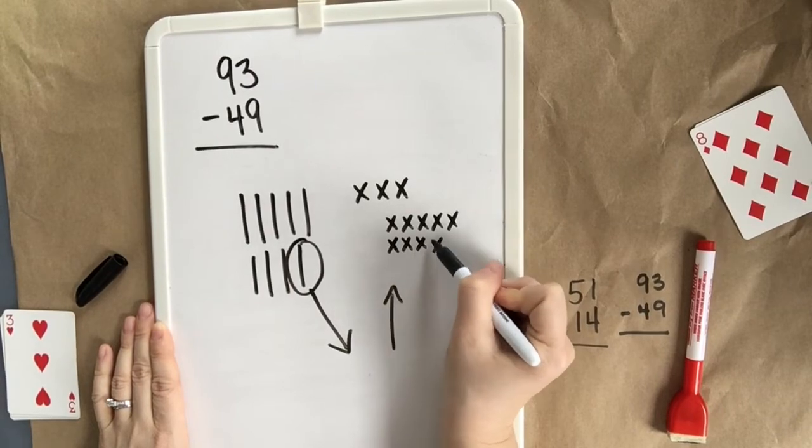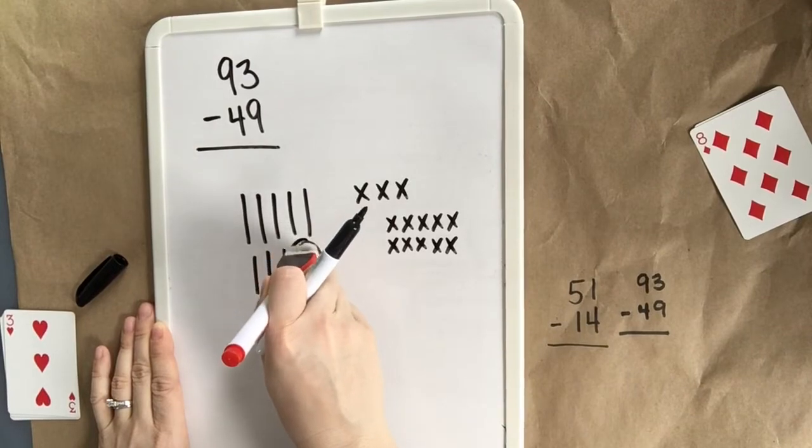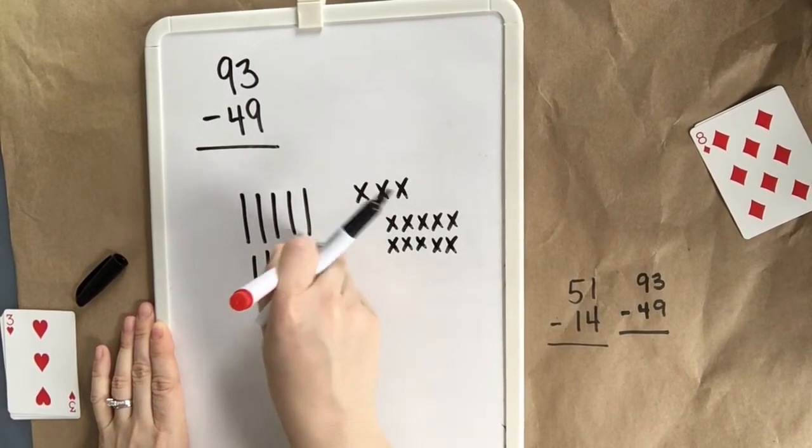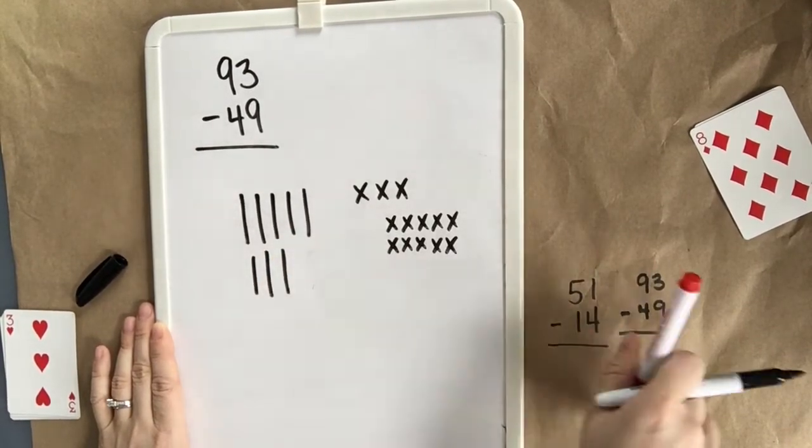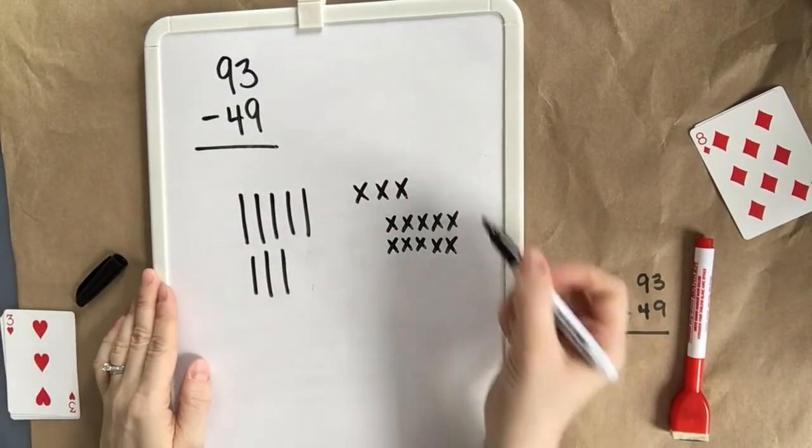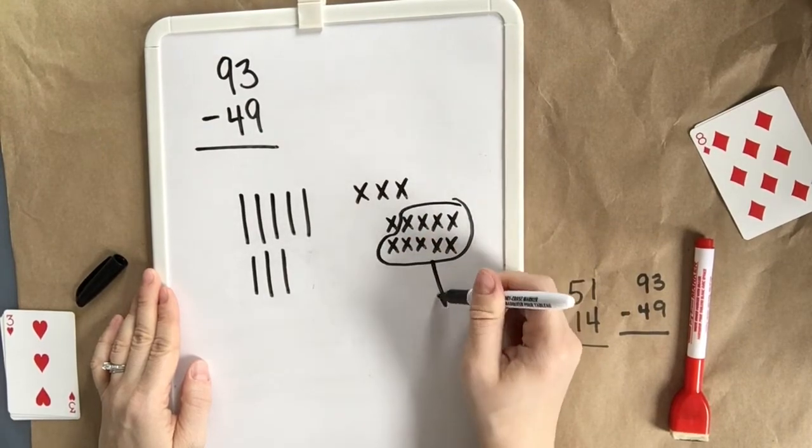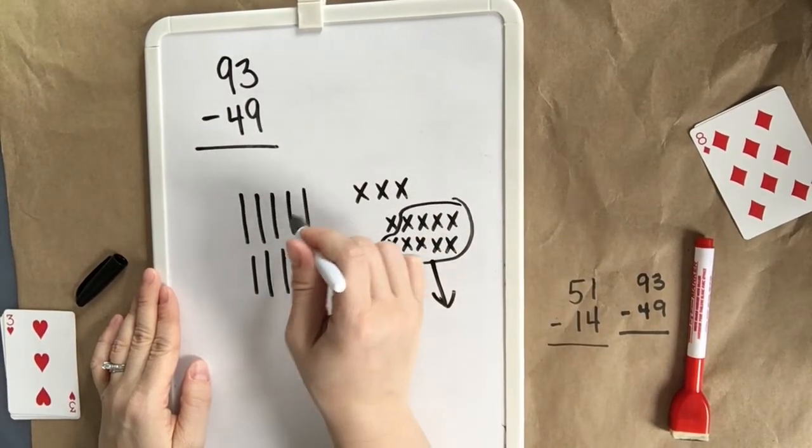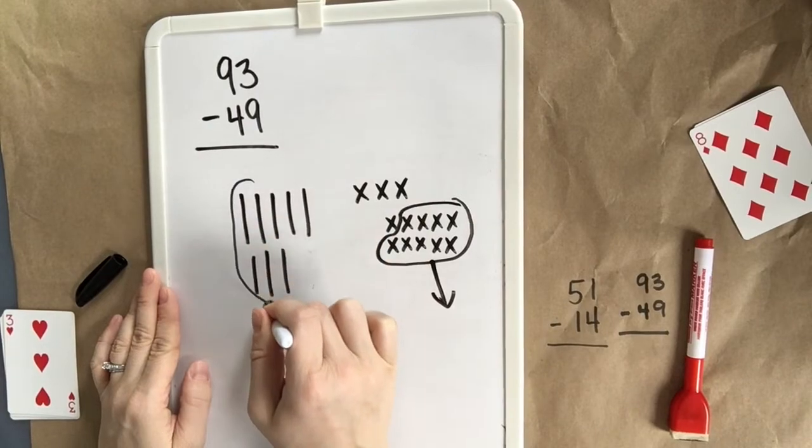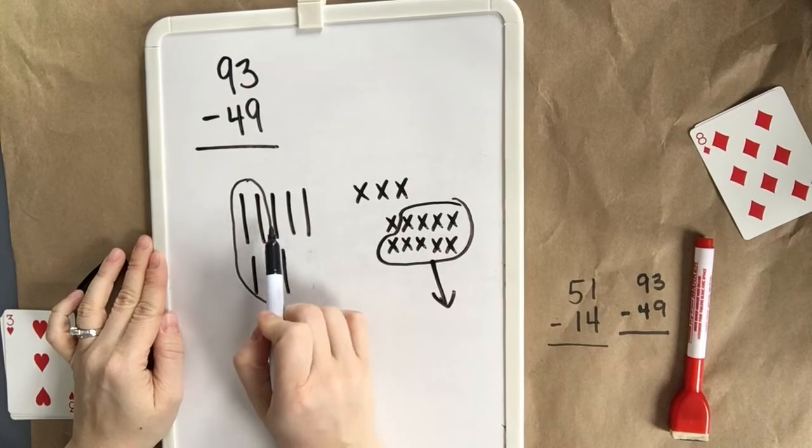7, 8, 9, 10. There we go. You'll see that you still have 80 in the 10s and 13 in the 1s. So it adds up to 93 still. Now we're going to take 9 away from the 1s and 4 away from our 10s to represent 40. 49.